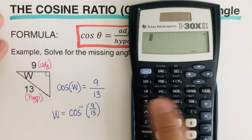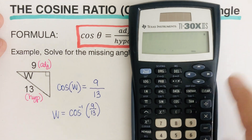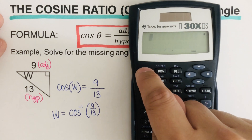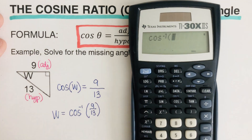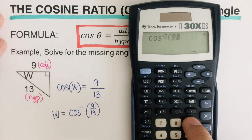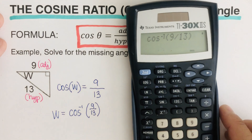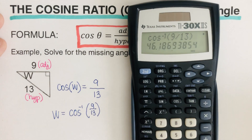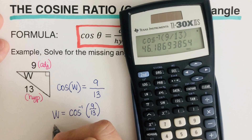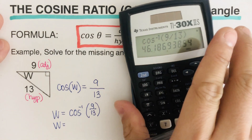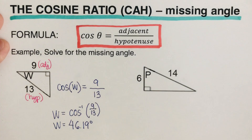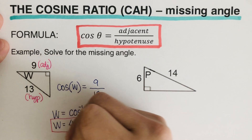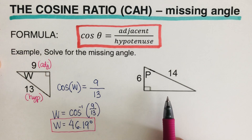Angle W equals cosine negative one — to set it up on the calculator, press Second and then hit Cosine, which gives you the inverse cosine. Then enter the fraction 9 divided by 13, close the parentheses, and hit Equals. Angle W is 46.19 degrees. At this time, I encourage you to pause this video and try this problem on your own, then unpause and check your answer.